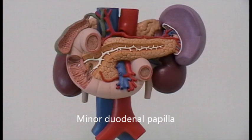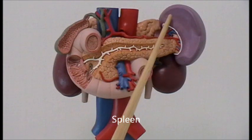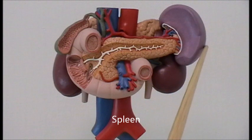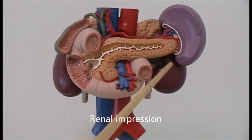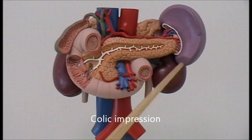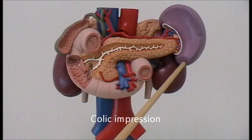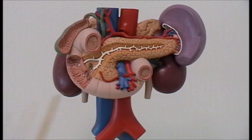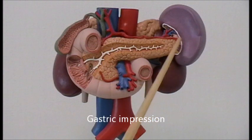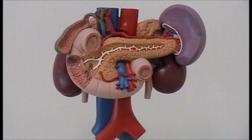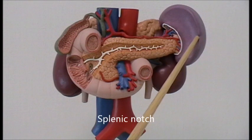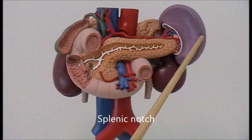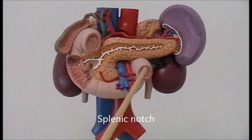That is the minor duodenal papilla. The spleen has a visceral surface and a diaphragmatic surface. The visceral surface of the spleen is partly related to the left kidney. This impression on the visceral surface is related to the left colic flexure, or the splenic flexure, of the large intestine. And the impression here is related to the stomach — the gastric impression. The spleen is characterized by a superior border that is notched, and when the spleen enlarges about three times its normal size, the splenic notch can be palpated beneath the left costal margin.